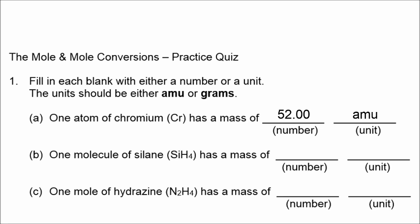For this next example, silane, we have silicon, 28.09, plus four times the mass of hydrogen. That gives us a total of 32.122, again, AMUs, because we're measuring individual things like atoms and molecules, very small.